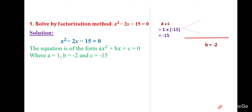So 5 and 3 are the two factors. Multiplying gives 15 and subtracting gives 2. According to the required result, we change the signs to −5 and +3. Multiplying: (−5)(+3) = −15. Subtracting: −5 + 3 = −2. Both conditions are satisfied: the a×c condition and the b condition.